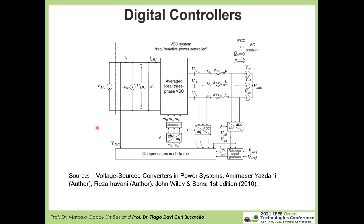This figure shows a system for illustration where linear controllers can be employed. The system has an input DC source, a voltage source converter, an output filter, and the grid. Some variables are measured and sent to the compensator block, and this strategy is running in the DQ reference frame. The point is that this system can use linear controllers like the PI or PR, depending on what kind of response you want and allow for this system.